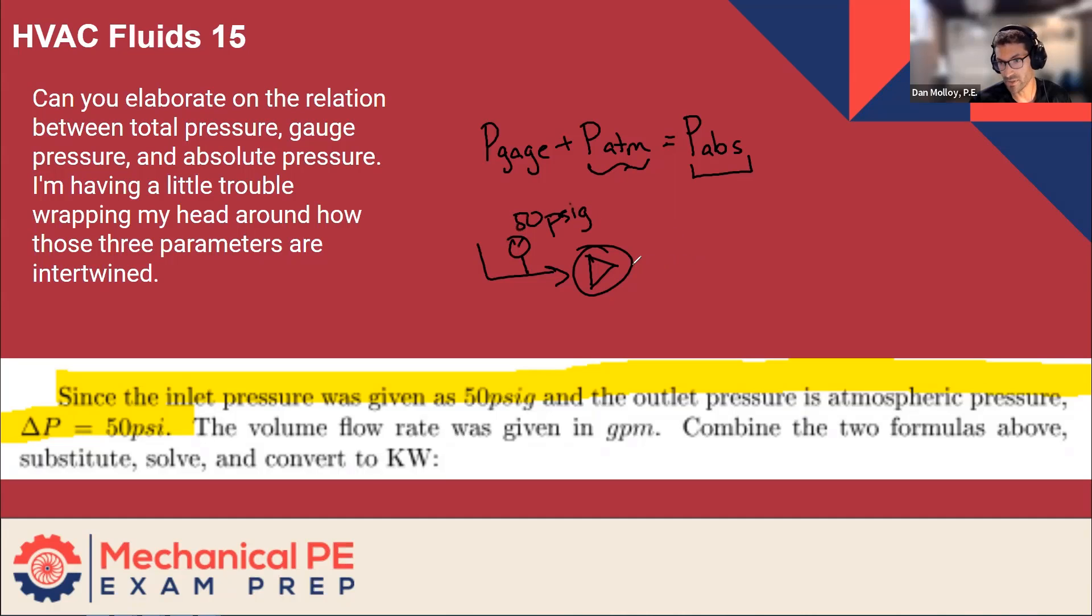And then on the outlet side, it's being discharged to the atmosphere. So the pressure of the atmosphere, if there was a gauge, it would measure zero. So the delta P is 50 minus zero. Another way to think about it, it would be zero psi g. That's really the right way to think about it.